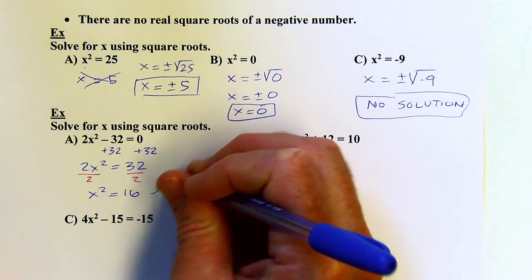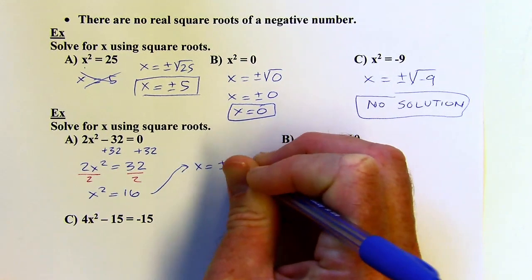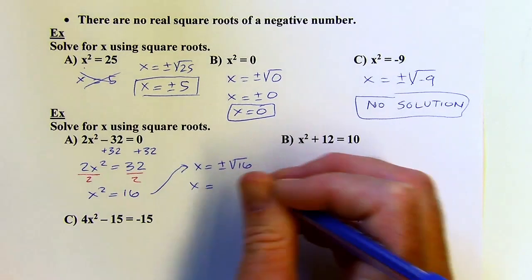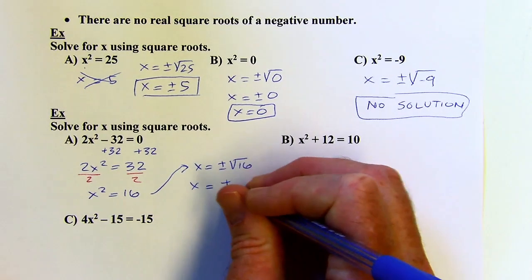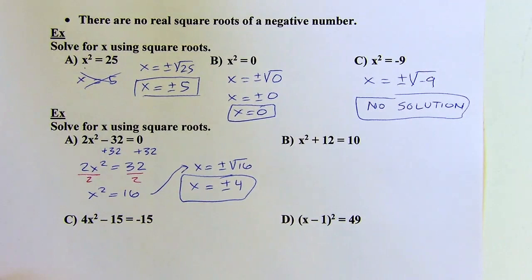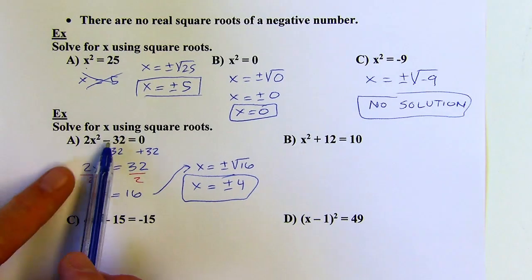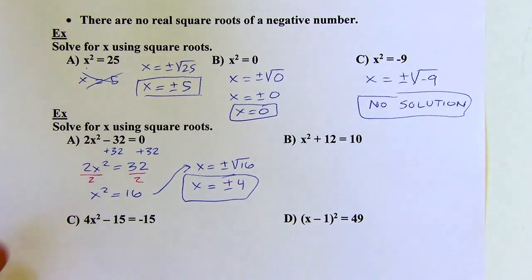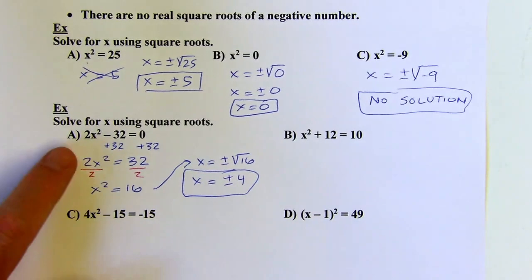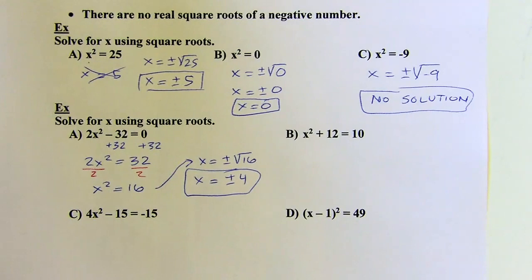Now that I've got x squared isolated, I can take the square root of both sides. Don't forget — plus or minus square root of 16. Square root of 16 is 4, because 4 times 4 is 16, so positive or negative 4. You can always test your answers: plugging in positive 4 works, and so will negative 4, because when you square it, both come out to 16. You get 2 times 16 minus 32 equals 0 — works either way.